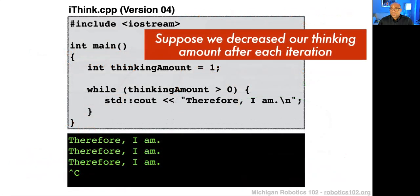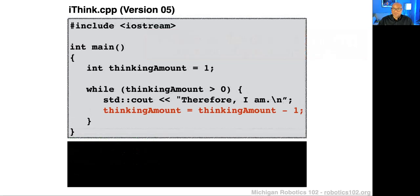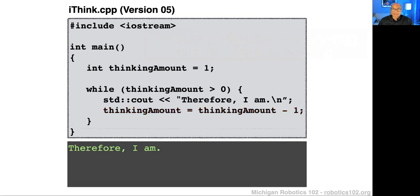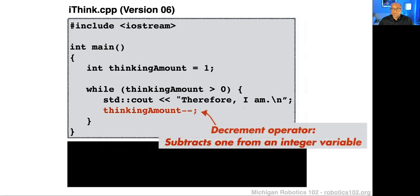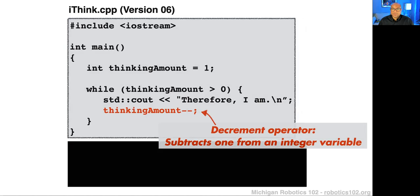Suppose we decreased our thinking after every iteration. If we didn't want this infinite loop, we could add a line that says the amount we're thinking decreases by one every time we go through an iteration. Running that with thinking_amount initialized to one, we would only say 'therefore I am' one time. We could alternatively use what's called the decrement operator — the variable name with two dashes behind it — which will subtract one from an integer variable. In addition to decrementing, we can increment, which adds one to a variable.